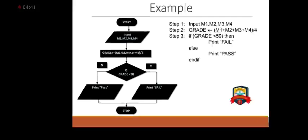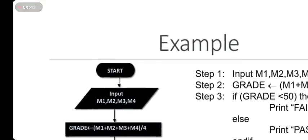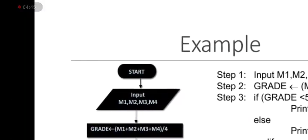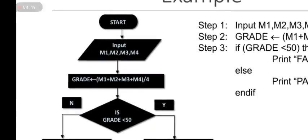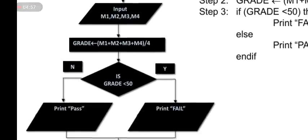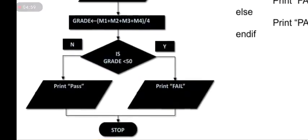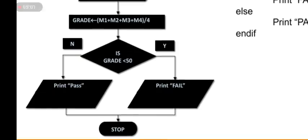In flowchart, the result will be shown like that. Start is represented using terminal. Input is given showing parallelogram. Parallelogram representing input values, four values. Processing is done using rectangular shape.